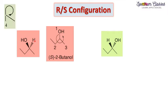The rotation of groups 1, 2, 3 is anticlockwise. Since the fourth priority group is considered on the vertical line, anticlockwise rotation is designated as S. When writing RS nomenclature, the configuration symbol is written in brackets and separated from the IUPAC name by a dash or hyphen. In this way we get the RS nomenclature for the given compound.